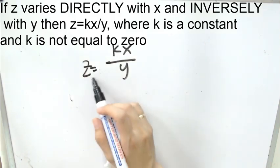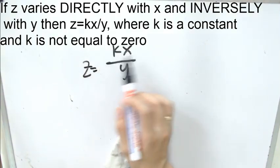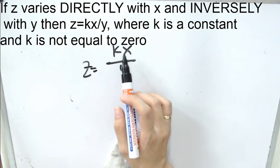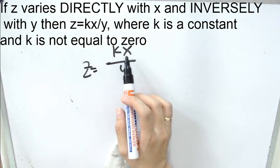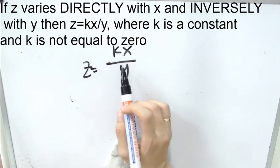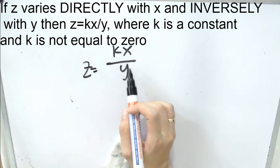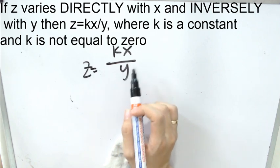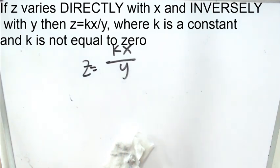Again, z varies directly. When we say directly, it must be the multiplication part, and it must be found at the numerator. And inversely with y, y will be at the denominator part. Still, k is constant, and k is not equal to zero.